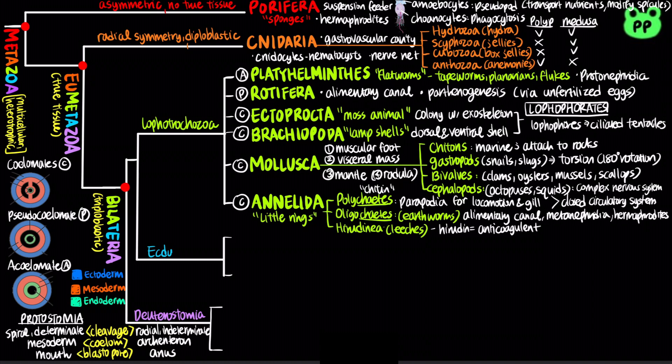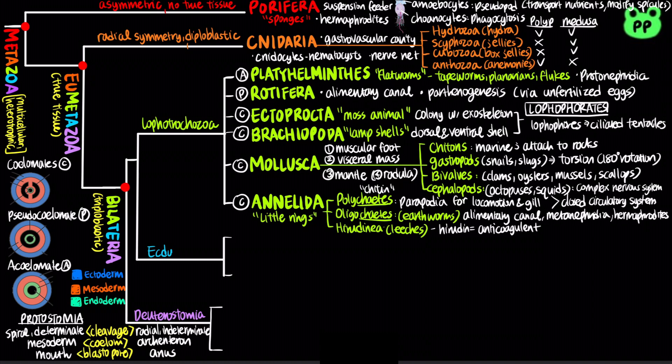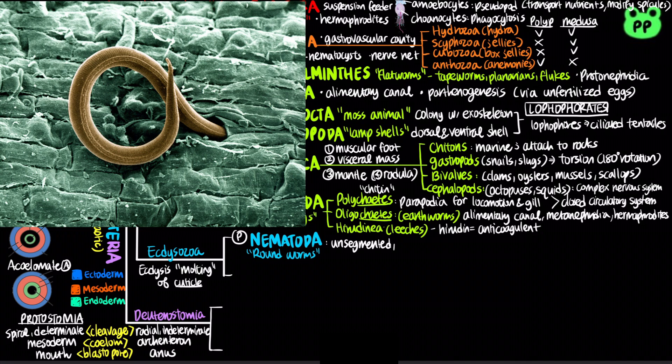Bilateria also contains another clade known as Ecdysozoa, characterized by a tough coat known as a cuticle that is molted through a process called ecdysis. The two largest phyla of ecdysozoans are nematodes and arthropods. Nematodes, also known as roundworms, are pseudocoelomates with an unsegmented body.